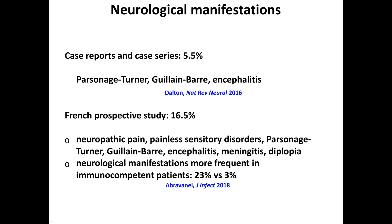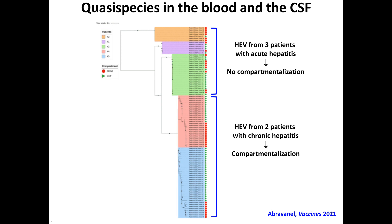It is possible to detect the virus in the CSF. In a recent study performed by Florence, we showed a compartmentation of the virus in patients with neurologic manifestations and chronic infection. The viral clones found in the CSF were very different from the clones found in the blood, and this was consistent across patients.